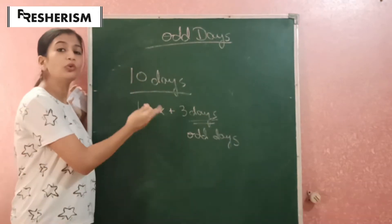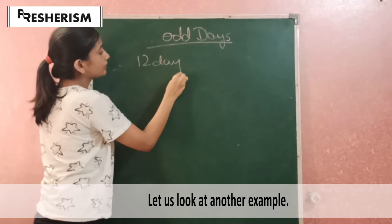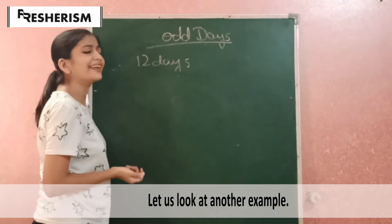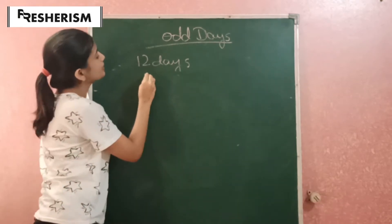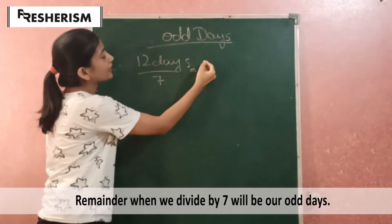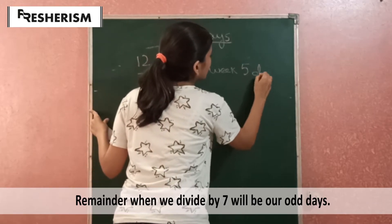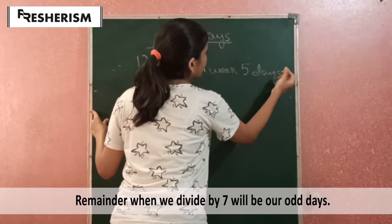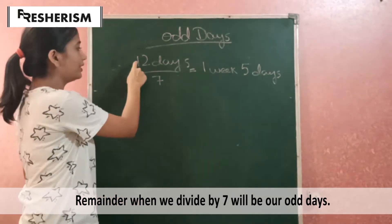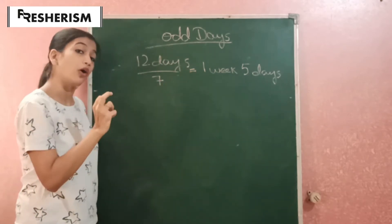Let's check how to calculate the number of odd days. Suppose it is given 12 days. Always divide the given days by 7 — because the week contains 7 days. If we divide 12 by 7, then there will be 1 week and 5 days. The 5 is the remainder. So these 5 days are the odd days.